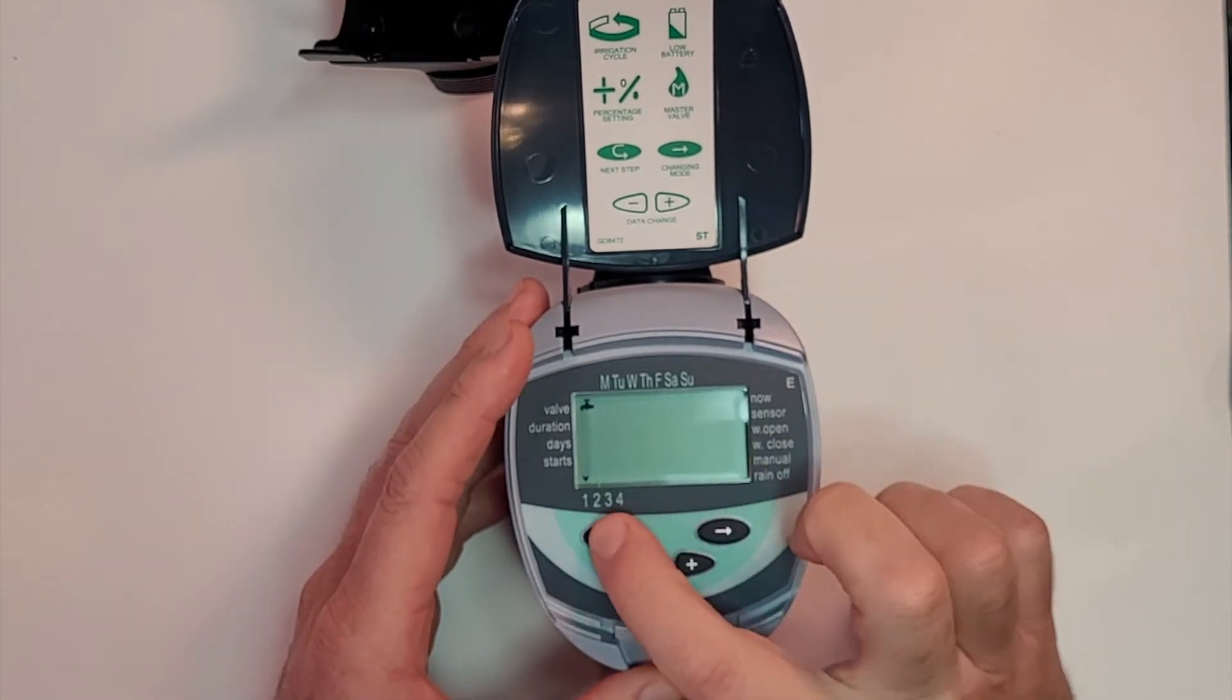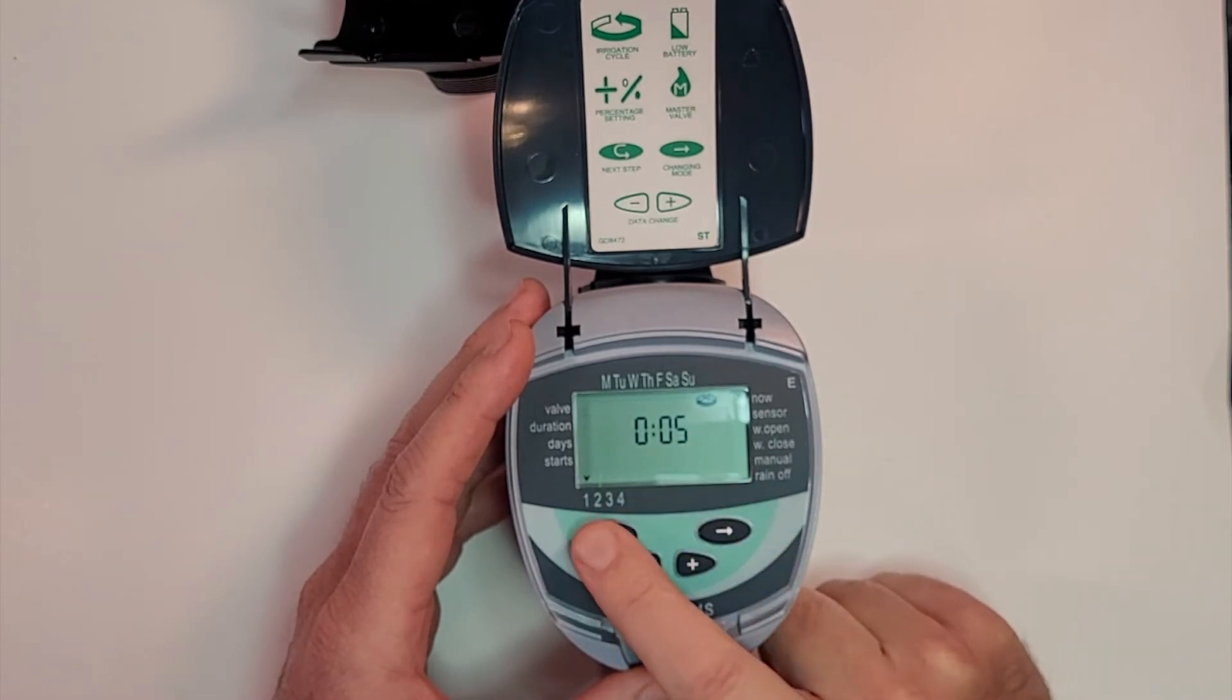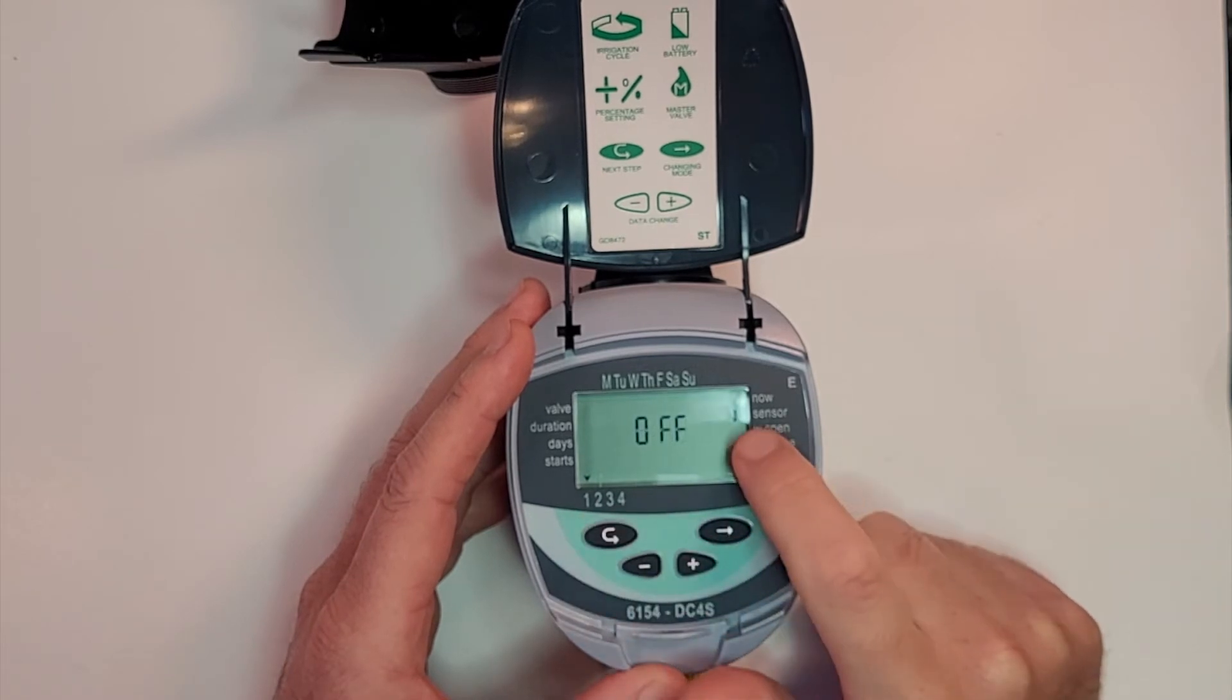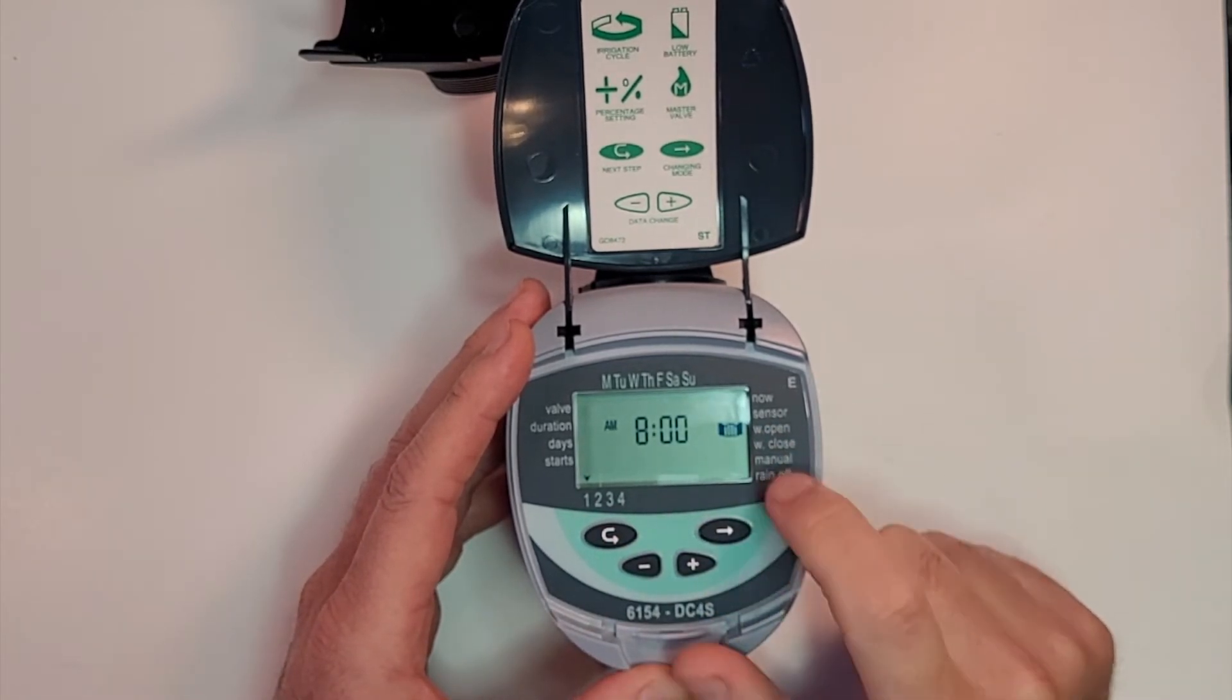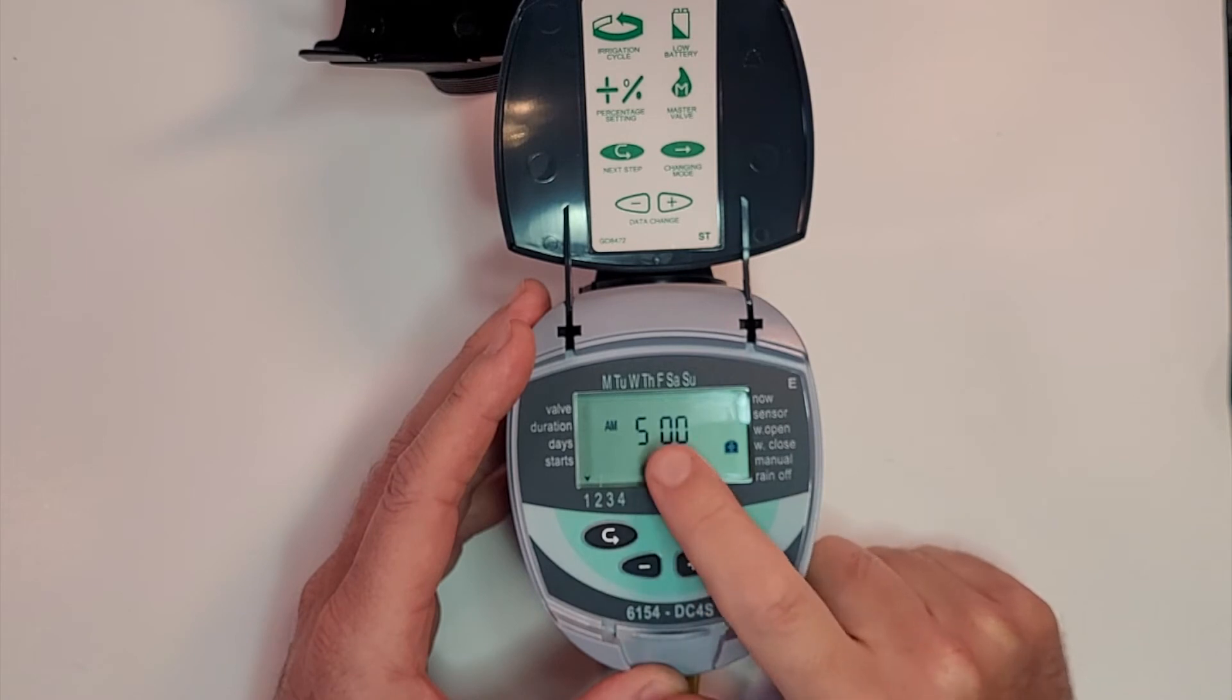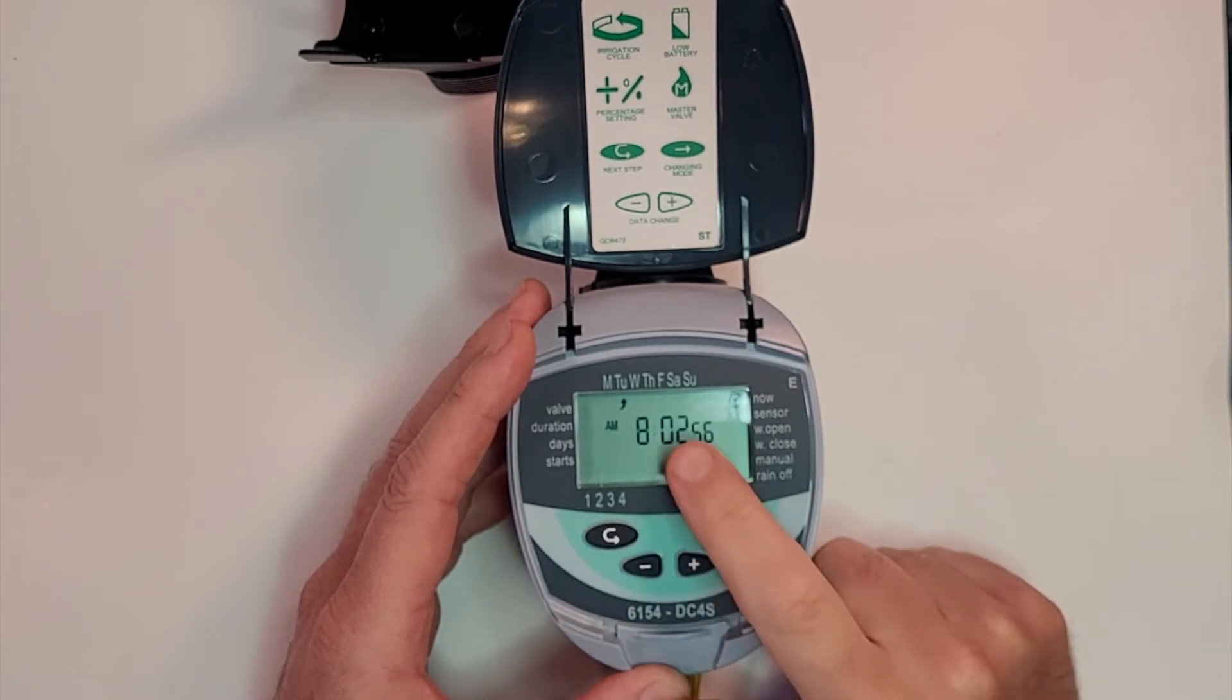We're going to hit enter. So now we have valve one set for 10 seconds, runs every five minutes on a cycle starting at 8:10, no rain sensor attached or used in this situation. We open the window at 8 AM, it can start irrigating at 8 AM, it will stop irrigating at 5 PM, and we do not have a manual button used.